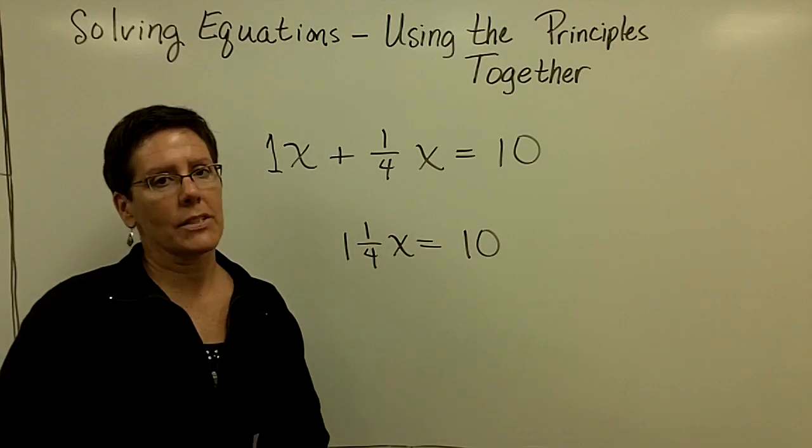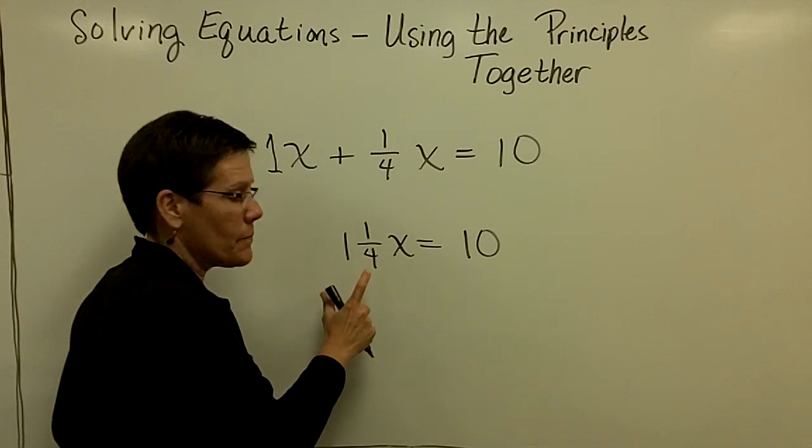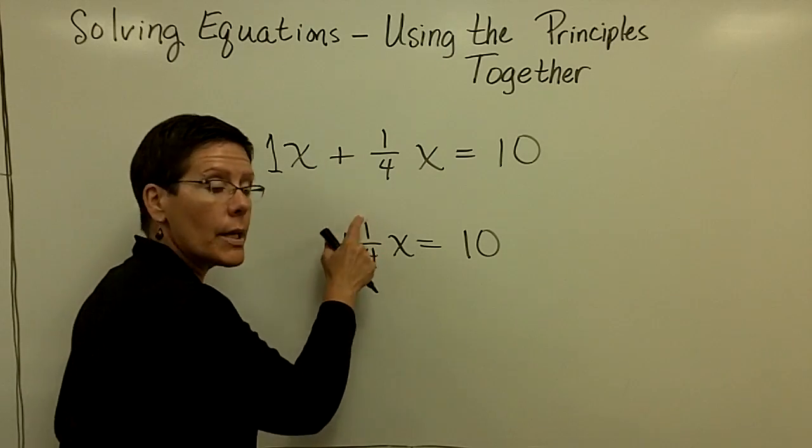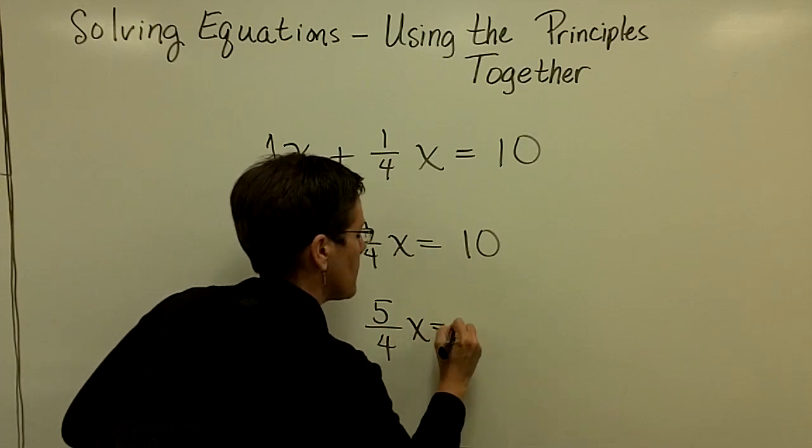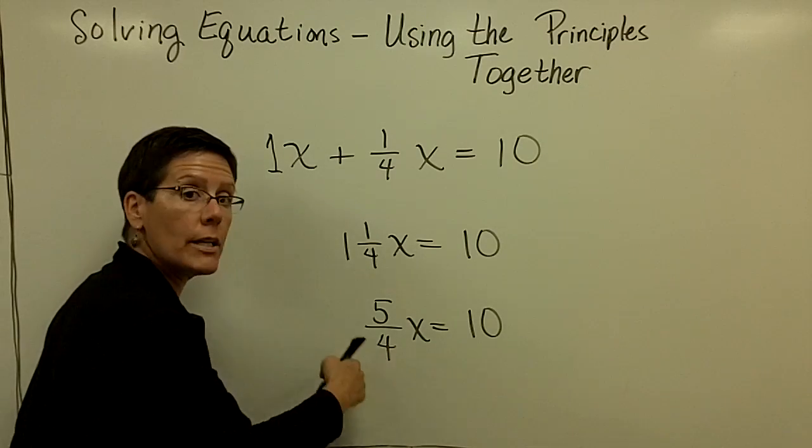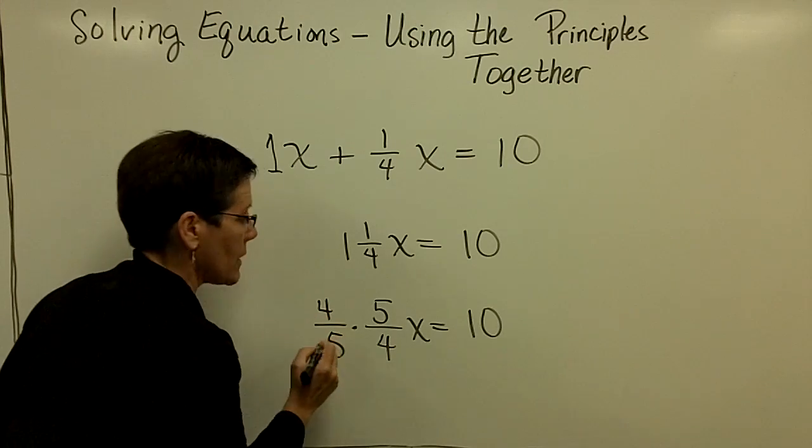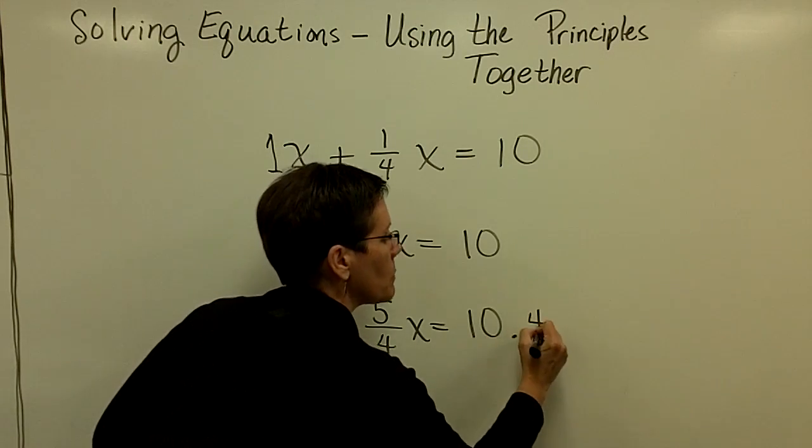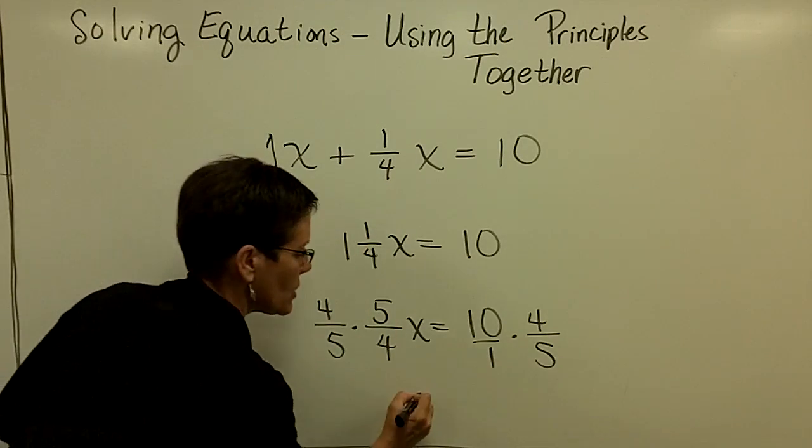I really don't like to work with mixed fractions. I would rather call this 5 fourths. 4 times 1 is 4, plus 1 is 5 fourths x. And then I will multiply by the reciprocal to get rid of that coefficient. So I'll multiply by 4 fifths on the left. Therefore, I have to multiply by 4 fifths on the right. That gives me just x.